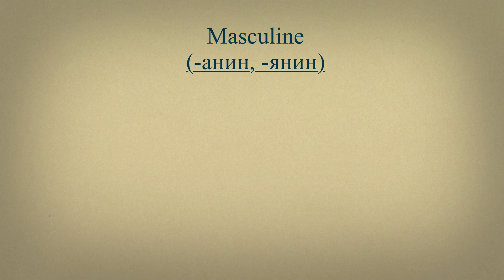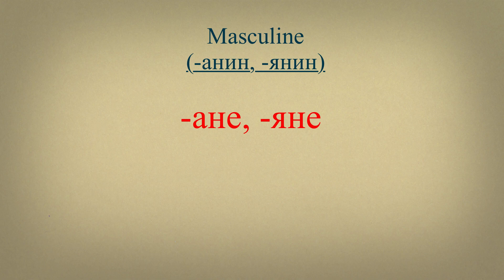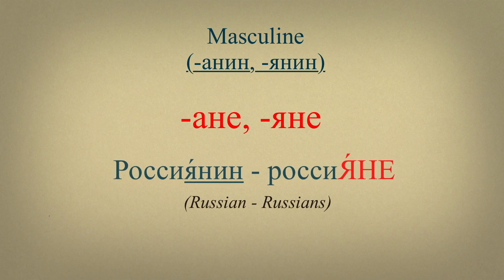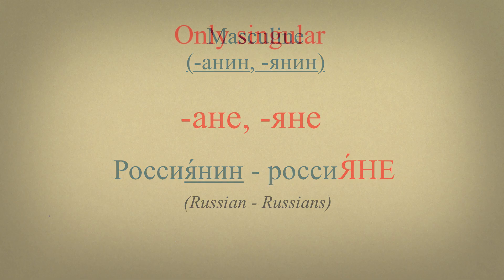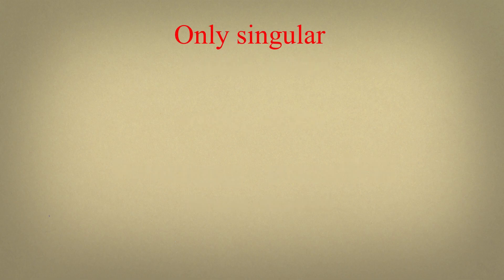Nouns with endings АНИН, ЯНИН, which denote a person, have endings АНЕ, ЯНЕ in plural form. For example, россиянин, россияне.